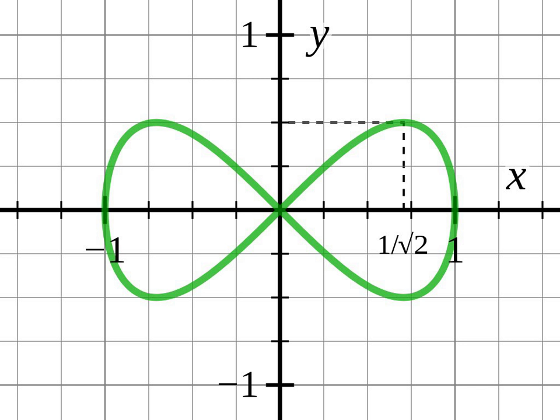Newton observed that a similar argument shows that the arc length of a smooth convex oval between two points is not given by an algebraic function of the points.